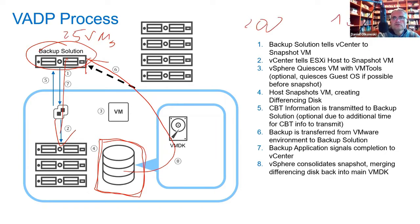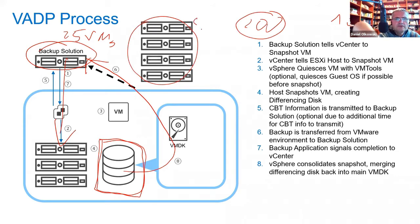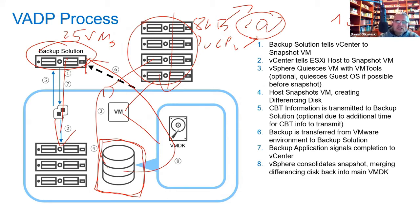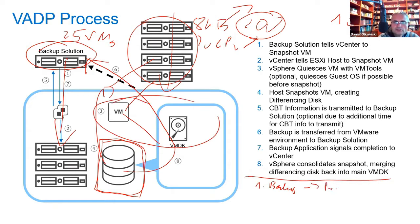If we have 1000 virtual machines we cannot backup all of them at the same time. For 200 virtual machines we need many proxies — each proxy requires 8 gigabytes of memory or more and two virtual CPUs or more. With a lot of proxies we lose a lot of money on infrastructure, and we need to assign VMs to specific proxies depending on datastores. When we perform a backup, production is slow or even paused for some moments — huge impact on production.